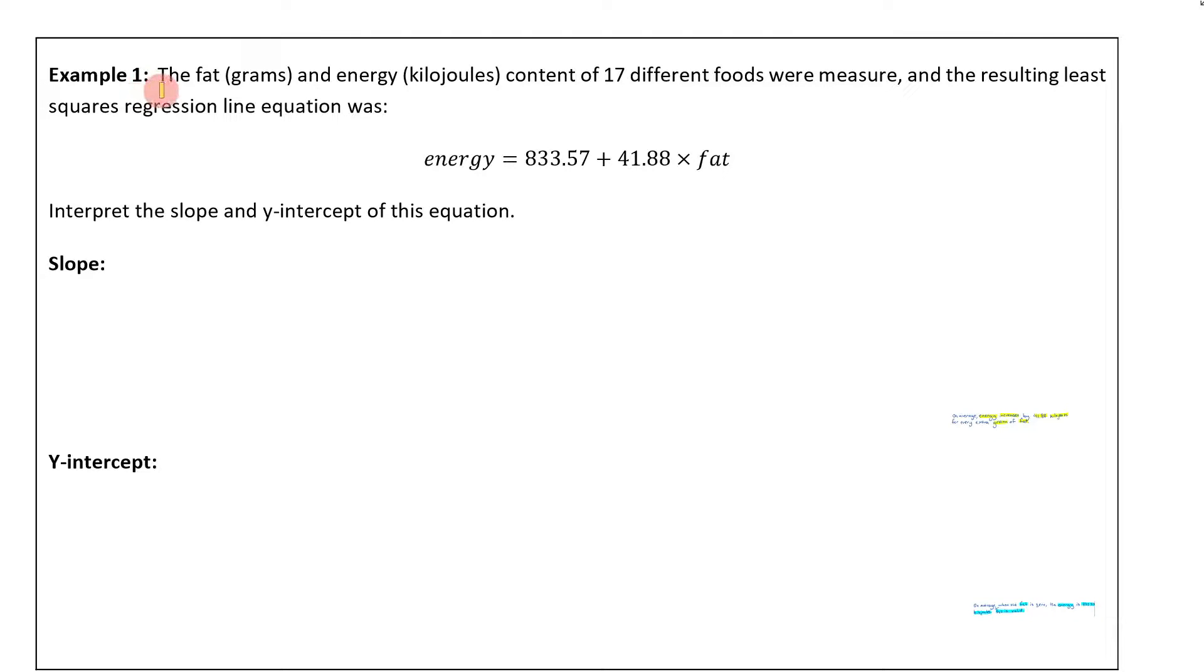We're going to work through this example. The fat and energy content of 17 different foods were measured, and the resulting least squares regression line equation was this. What we need to do is interpret the slope and the y-intercept.